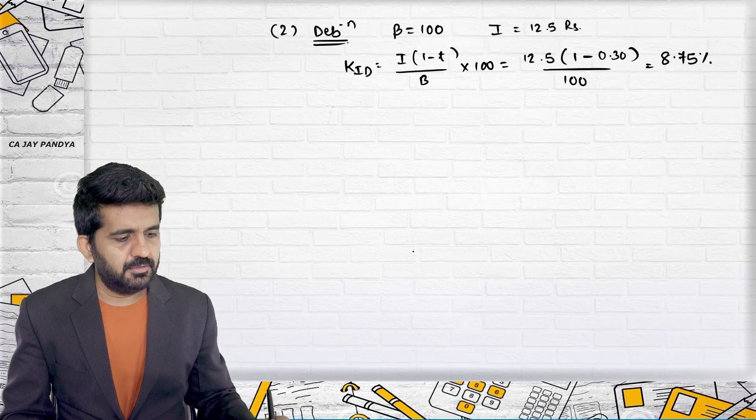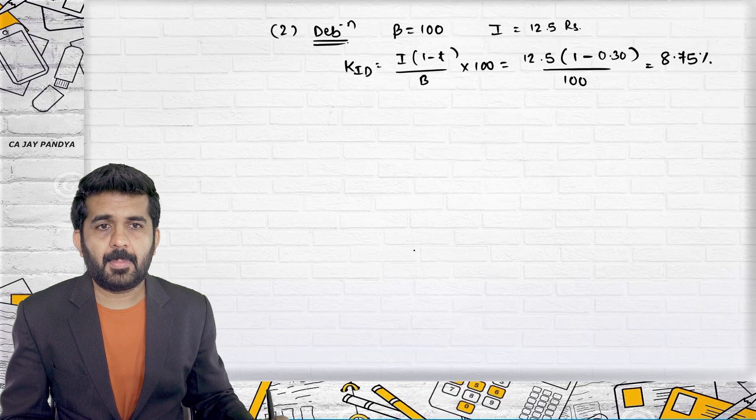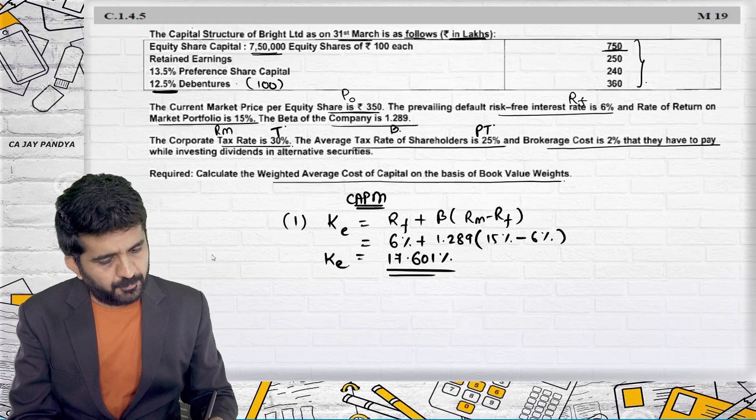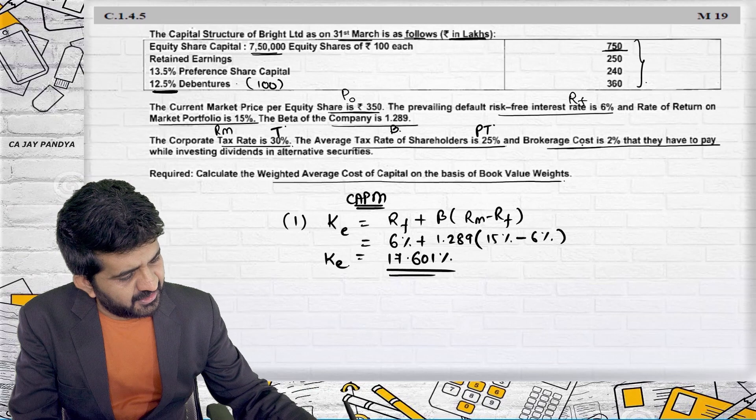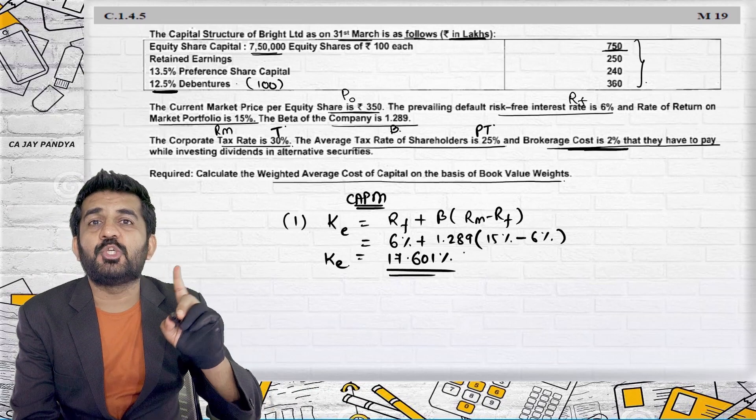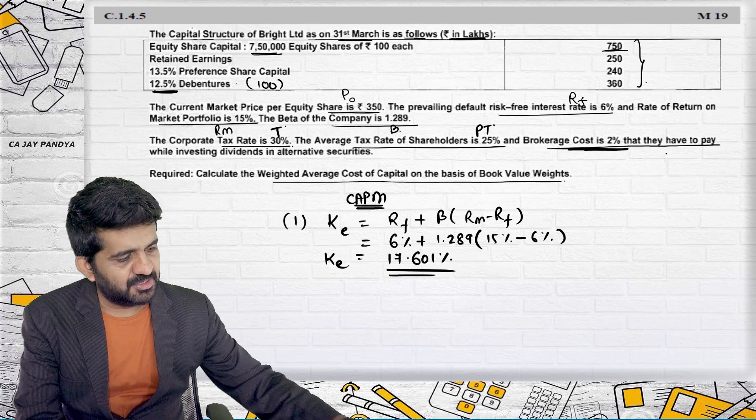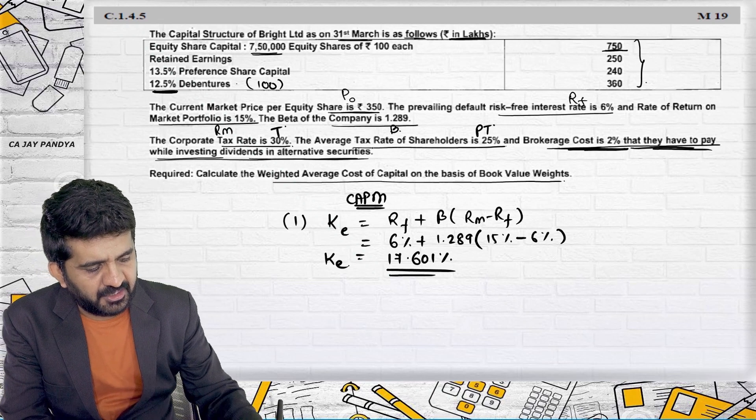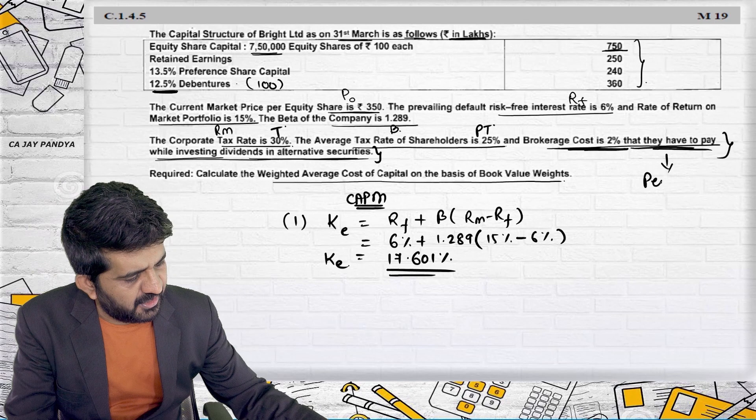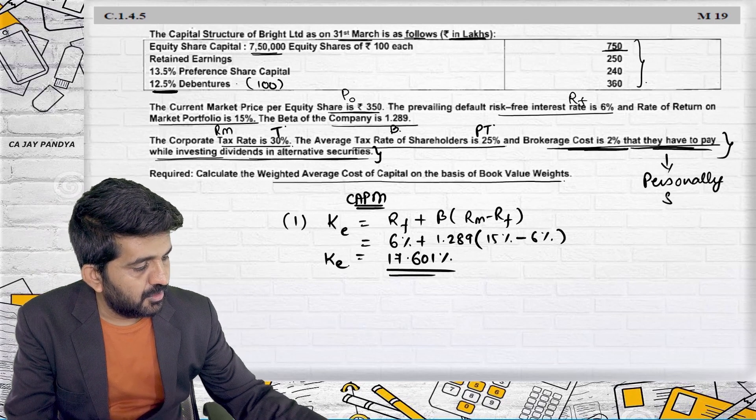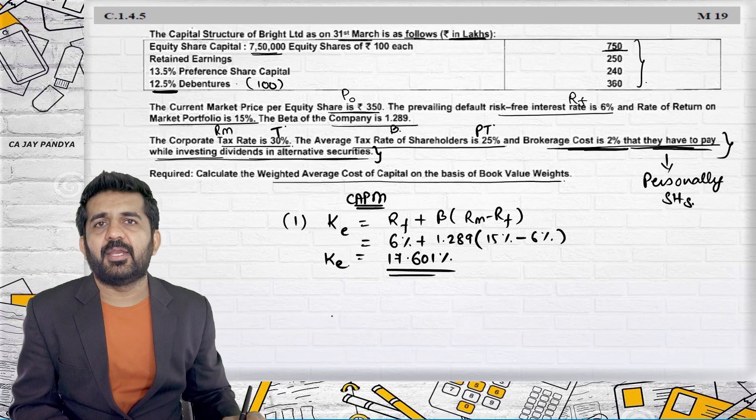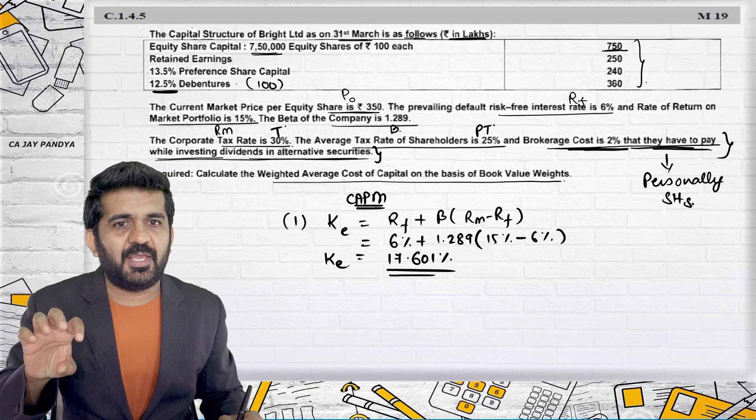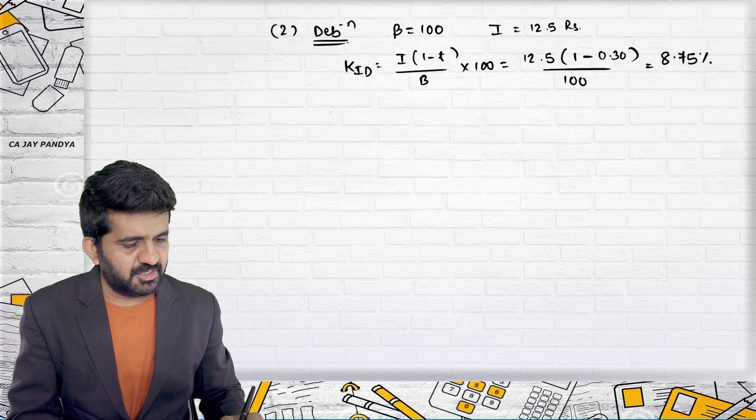Sir, brokerage must be minus? That brokerage is different. Try to concentrate. What that brokerage says is the brokerage is 2%, not while issuing the debentures. It is not while issuing the debentures. They have to pay while investing dividend in alternate securities. So it is personally for shareholders. We have done cost of reserves, in that case it will be important. Brokerage is not payable while issuing debentures, so it will not be considered here.